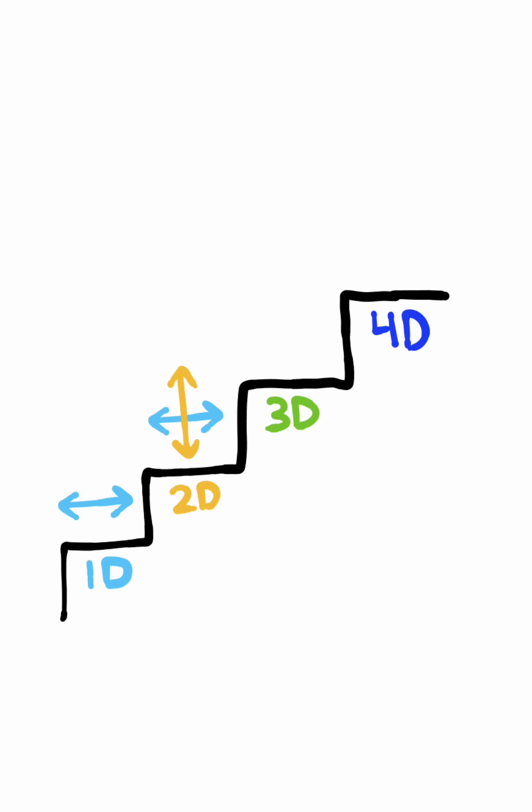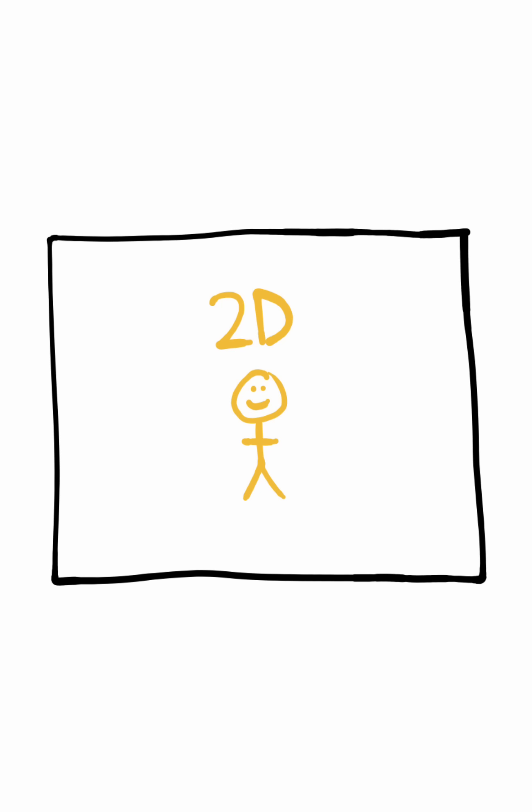Every time you go up a dimension, you define two new perpendicular directions. So a two-dimensional person would be able to move in four directions: left, right, up and down, or some sort of combination.